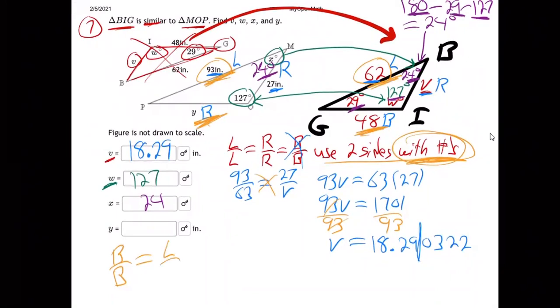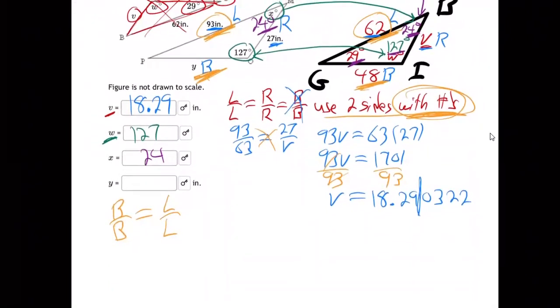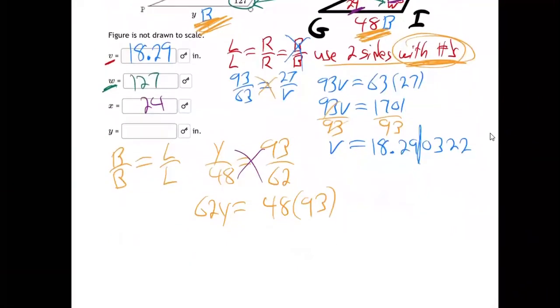So that'll be Y over 48, right, bottom with bottom, Y over 48 is left 93 with 62. There we go. And then cross multiply, so 62 times Y is 48 times 93, 4464.